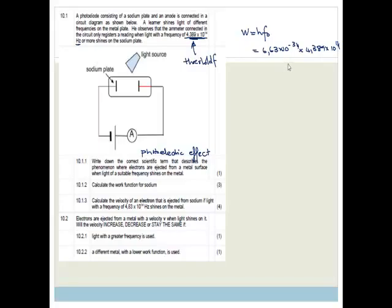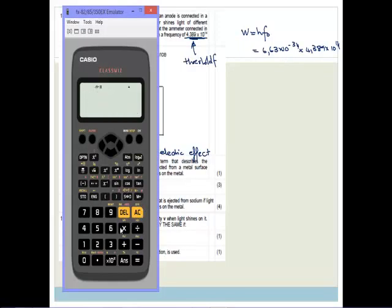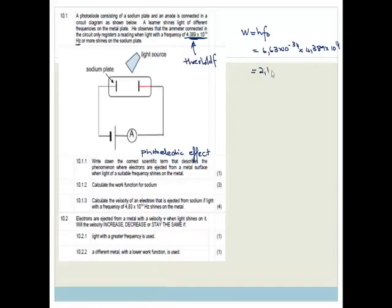So what do we need to do? We need to get out our calculators. So we go 6.63 exponent negative 34 times 4.389 exponent 14 and it all equals 2.19 times 10 to the minus 19. And grade 12, please put in your units. You lose marks if you don't put units in. And the units for the work function because its energy is joules.